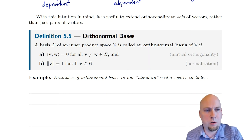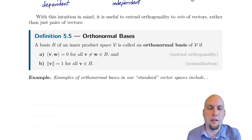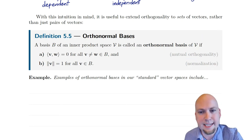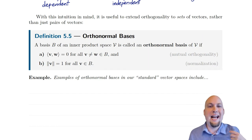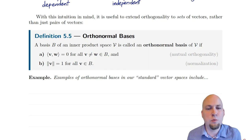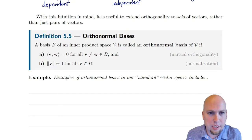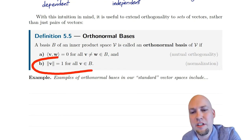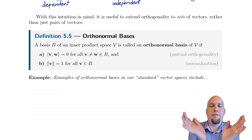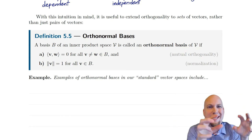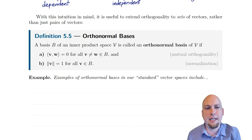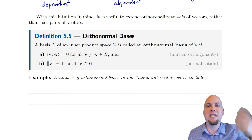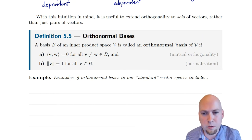The other thing we require is what makes it an orthonormal basis rather than just an orthogonal basis. This normalization condition means we scale every vector in the basis to have length one with respect to whatever inner product we're talking about. This is an easy condition to throw in after the fact, because once you have an orthogonal basis you can just rescale everything to have length one by dividing every member of the basis by its length. So this is just an easy extra condition that makes the basis even more well-behaved.